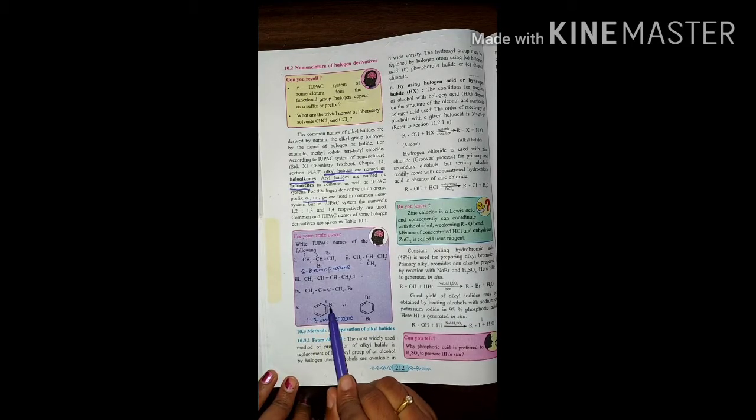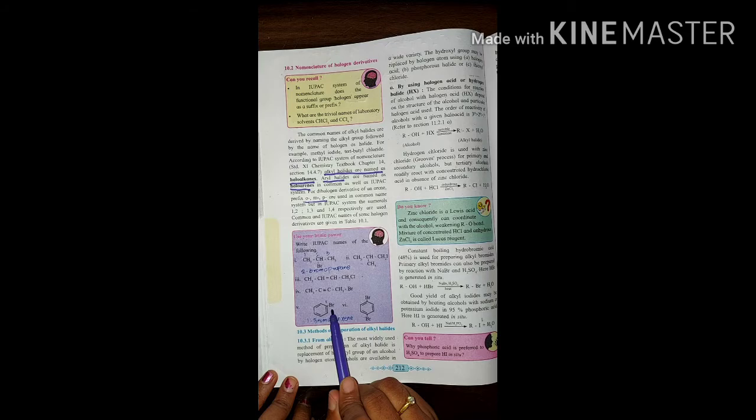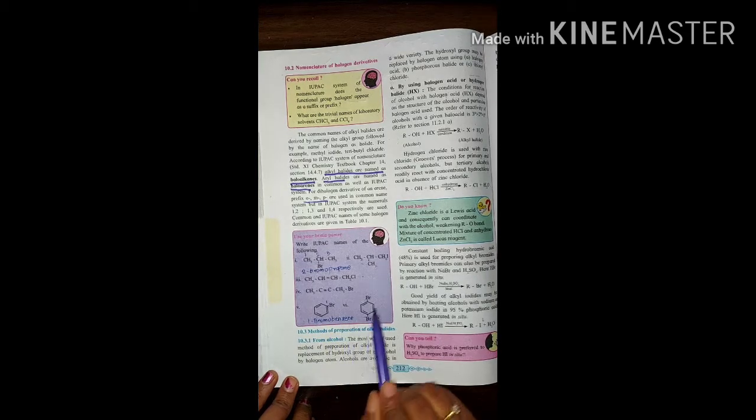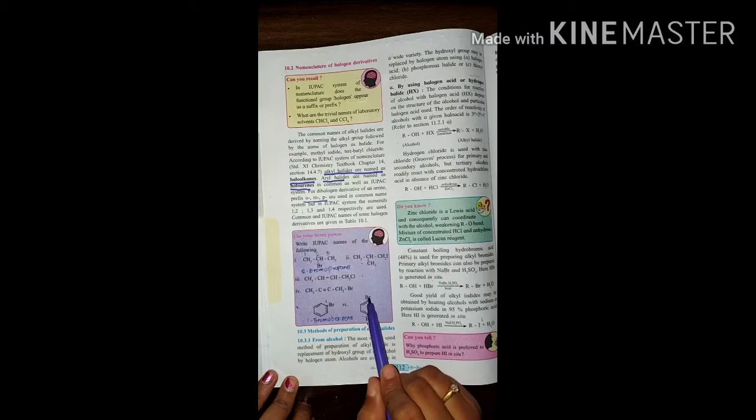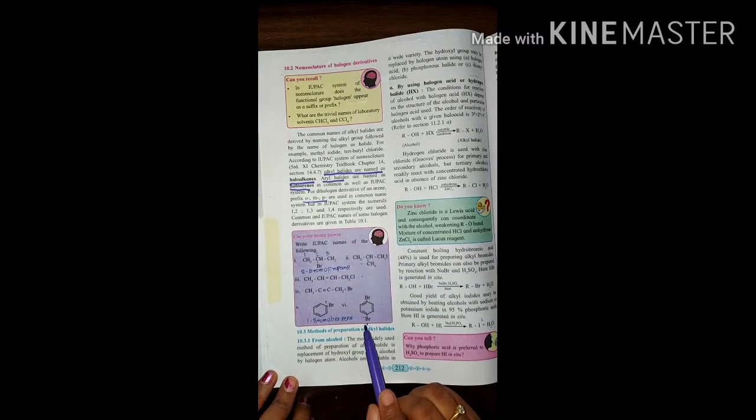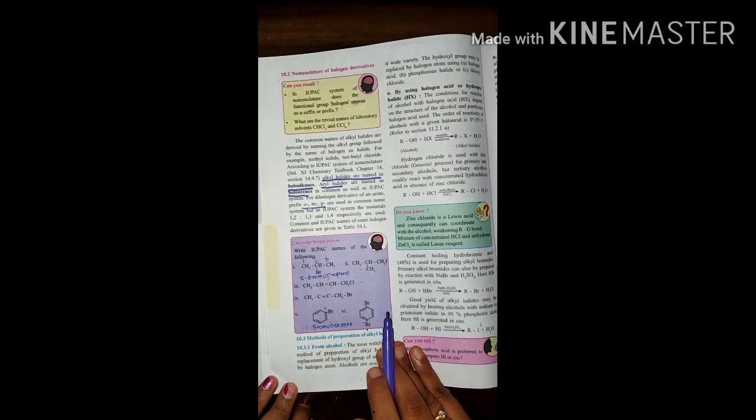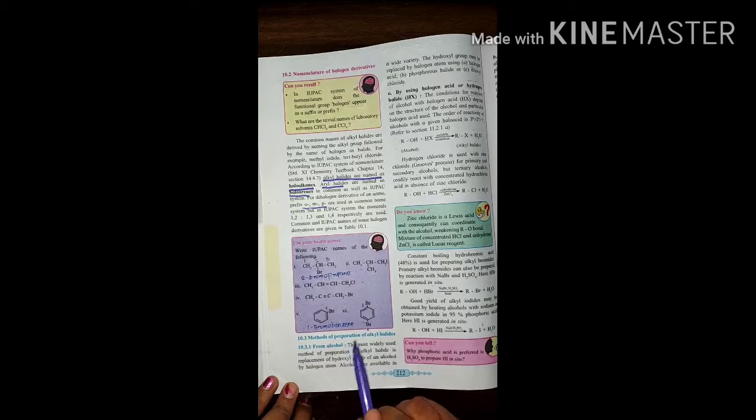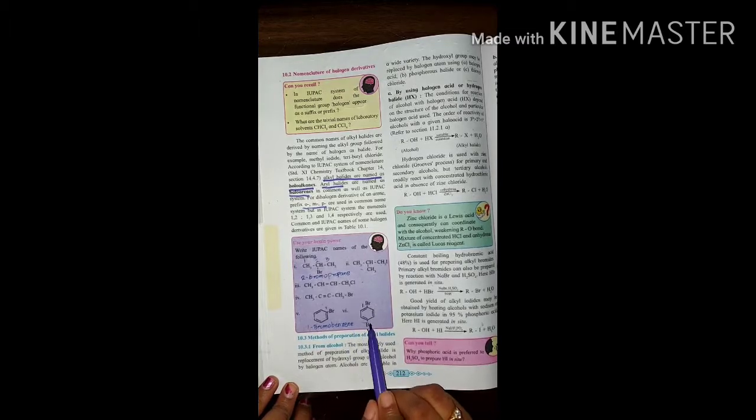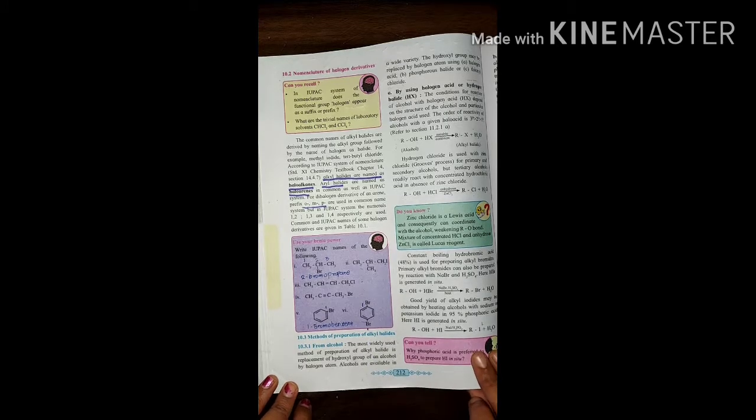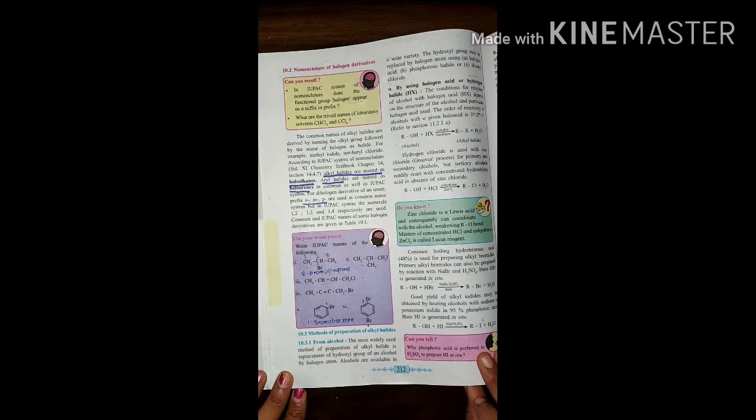Now for arene, if benzene has one bromine, it's called 1-bromobenzene. If there are two bromines, it's a dihalogen derivative. Where there's no functional group, we need to apply IUPAC nomenclature. We can give any position number one and then do the numbering accordingly.